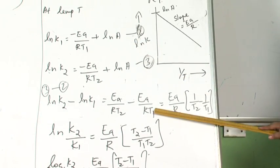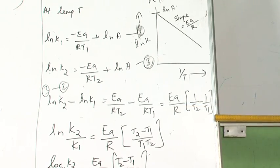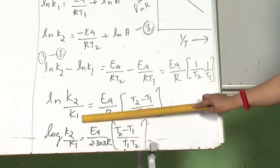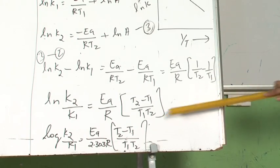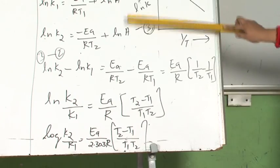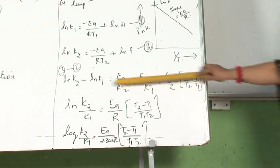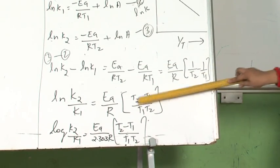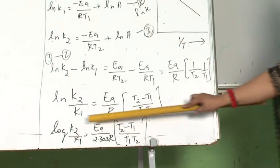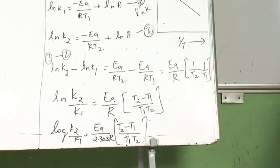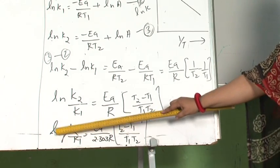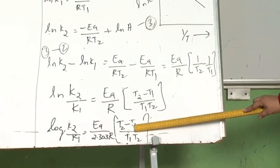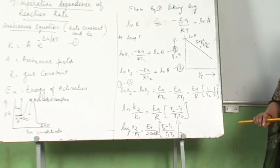The ln A terms cancel. Taking out Ea/R, we get (1/T₂ − 1/T₁). Since log A minus log B equals log(A/B), ln K₂ − ln K₁ becomes ln(K₂/K₁) = (Ea/R)·(T₂ − T₁)/(T₁·T₂). Converting natural logarithm to base 10 by multiplying with 2.303: log(K₂/K₁) = Ea / (2.303·R) · (T₂ − T₁)/(T₁·T₂). This is the Arrhenius relationship explaining the temperature dependence of a chemical reaction.